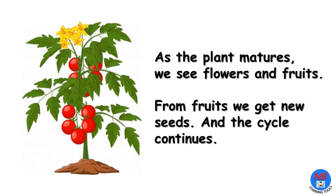As the plant matures, we see flowers and fruits. From fruits, we get new seeds, and the cycle continues.